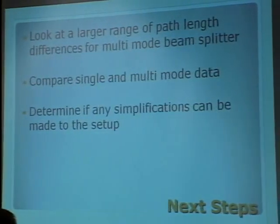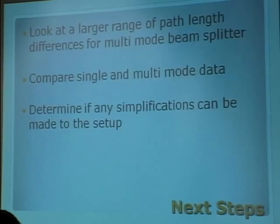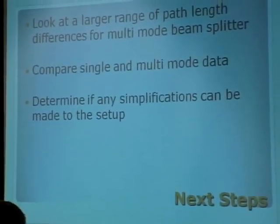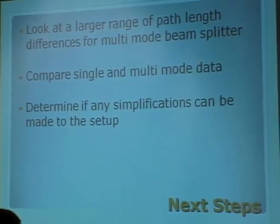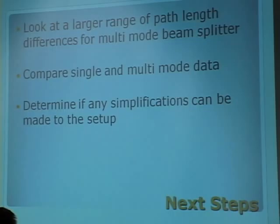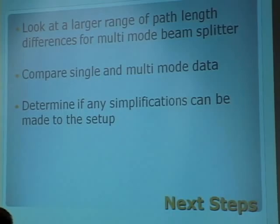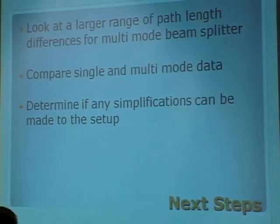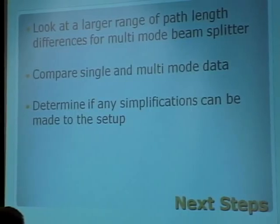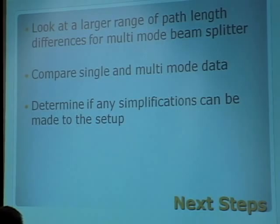So what next? First, we're going to try to look at a larger range of path length differences — try to zoom out that picture with the multimode beam splitter. At that point, we're going to compare the data we're getting with the single-mode beam splitter's dip, and look at the multimode data to see if there are any ways we can change our setup or improve it to obtain that dip. If we find that we can obtain the Hong-Ou-Mandel dip with a multimode beam splitter, that would mean a multimode beam splitter can be used in place of a single-mode beam splitter in an experimental setup.